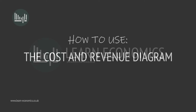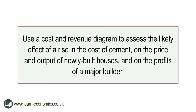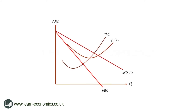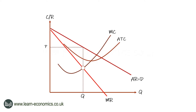Learn economics: how to use the cost and revenue diagram. Look at the following question: use a cost and revenue diagram to assess the likely effect of a rise in the cost of cement on the price and output of newly built houses and on the profits of a major builder. The cost and revenue diagram is the most effective way to explain the effects of a cost shock on a firm's price, its output, and profits.